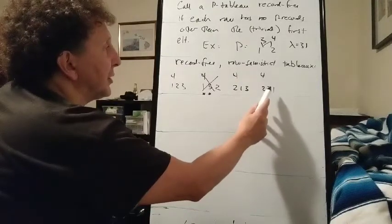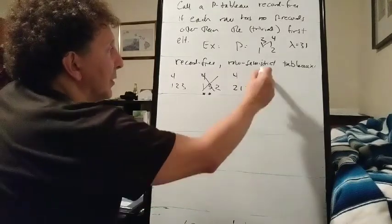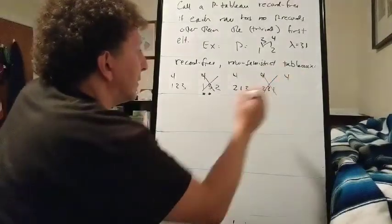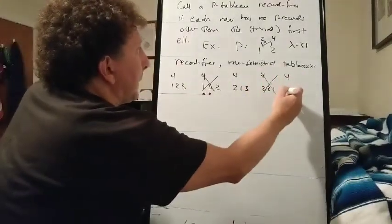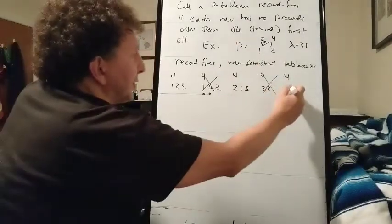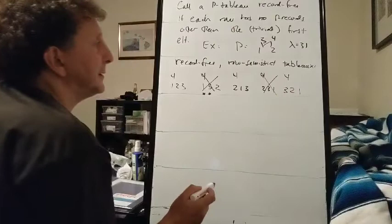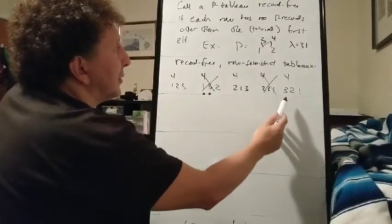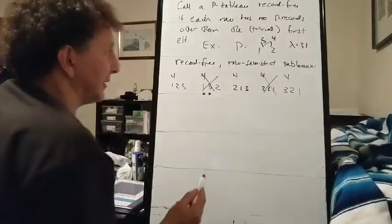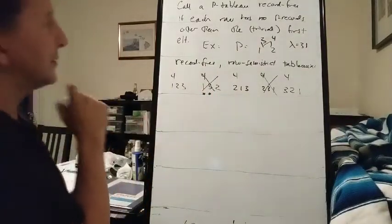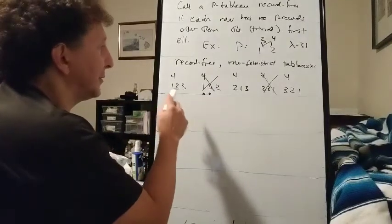This one is not row semi-strict because we have 3 greater than 1. We can't say 3, 1, 2 because that wouldn't be row semi-strict. We can do 3, 2, 1. 3 is not greater than 2. 2 is not greater than 1. 3 is the only record in that row. So these are 3 tableau that are record-free.